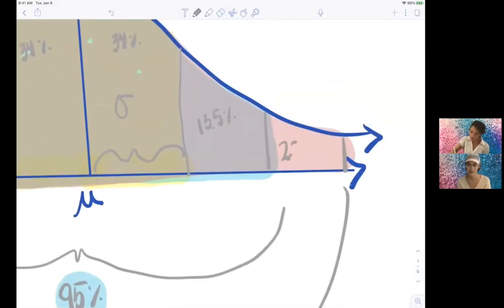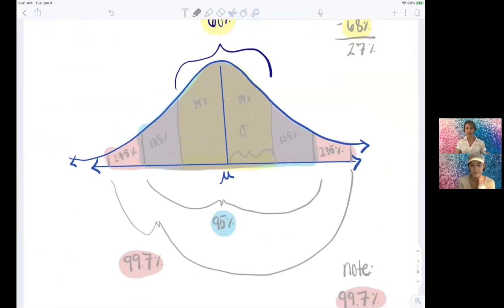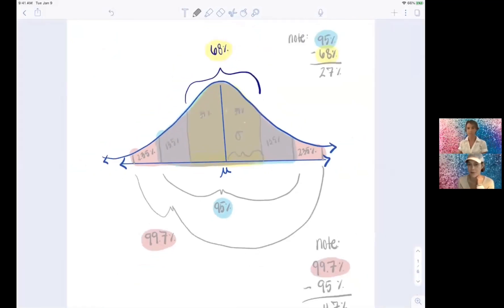Okay, now keeping in mind that the area, the total area under this curve, is accounting for a hundred percent of our data. Yes, what should the area of each of these little regions add up to? 100 percent, right.